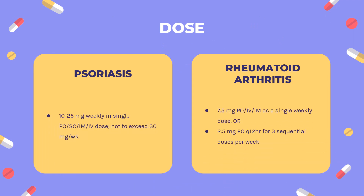Dose — Rheumatoid Arthritis: Indicated for management of severe, active rheumatoid arthritis in adults who have had an insufficient response or intolerance to an adequate trial of first-line therapy, including full-dose NSAIDs. Initial: 7.5 mg PO/IM as a single weekly dose, or 2.5 mg PO Q12HR for 3 sequential doses per week. Increase dose to optimum response; single dose not to exceed 20 mg per week PO. Increased risk of bone marrow suppression; reduce to lowest possible effective dose.